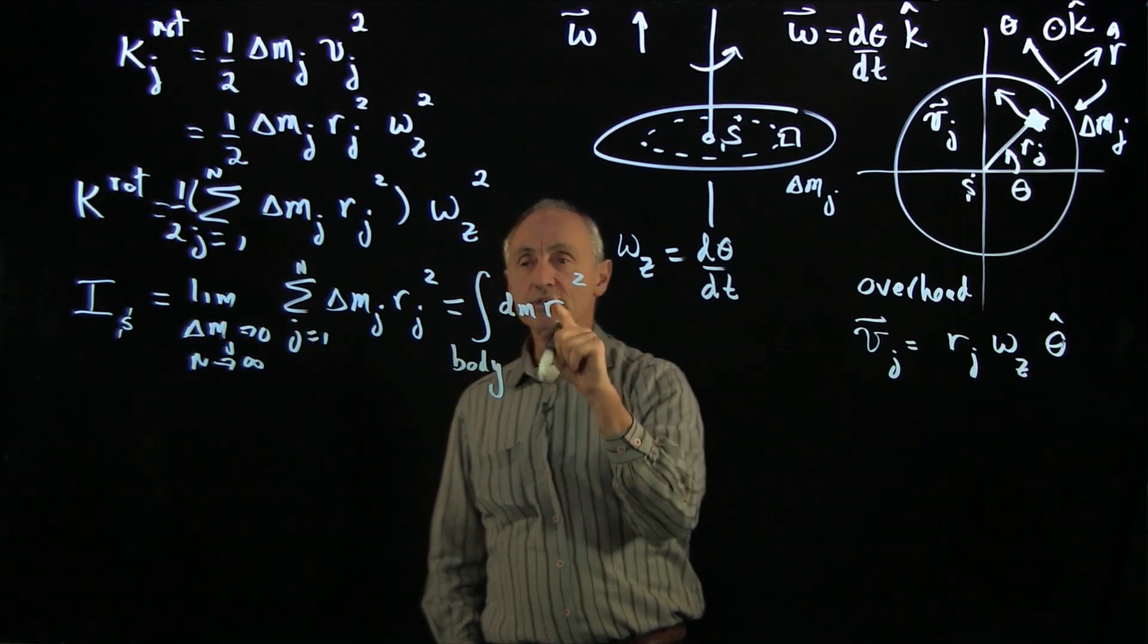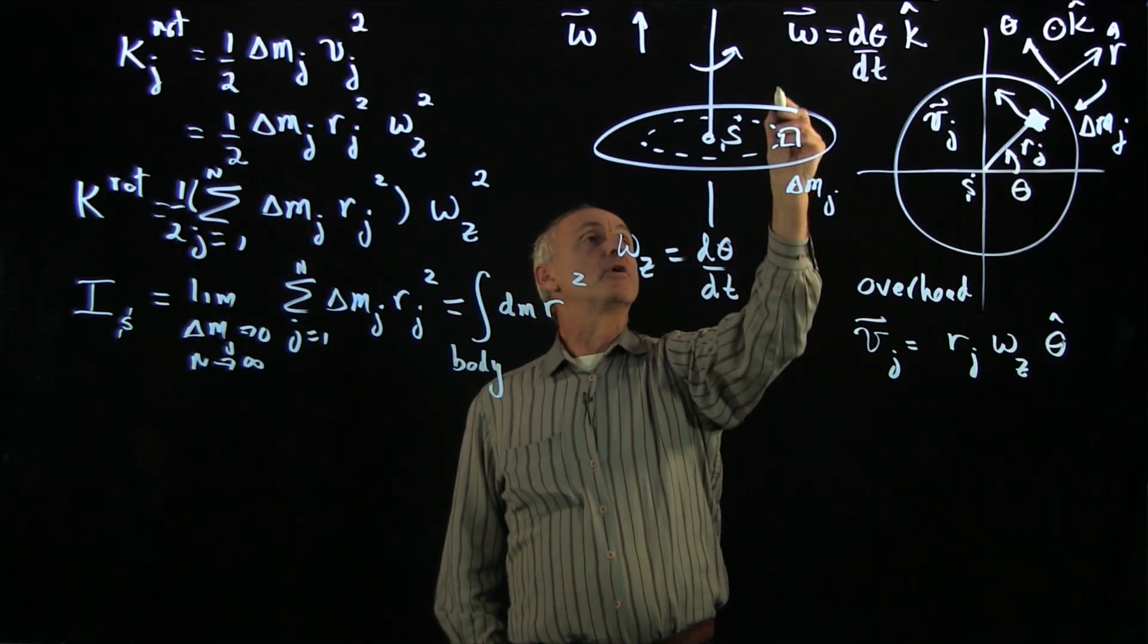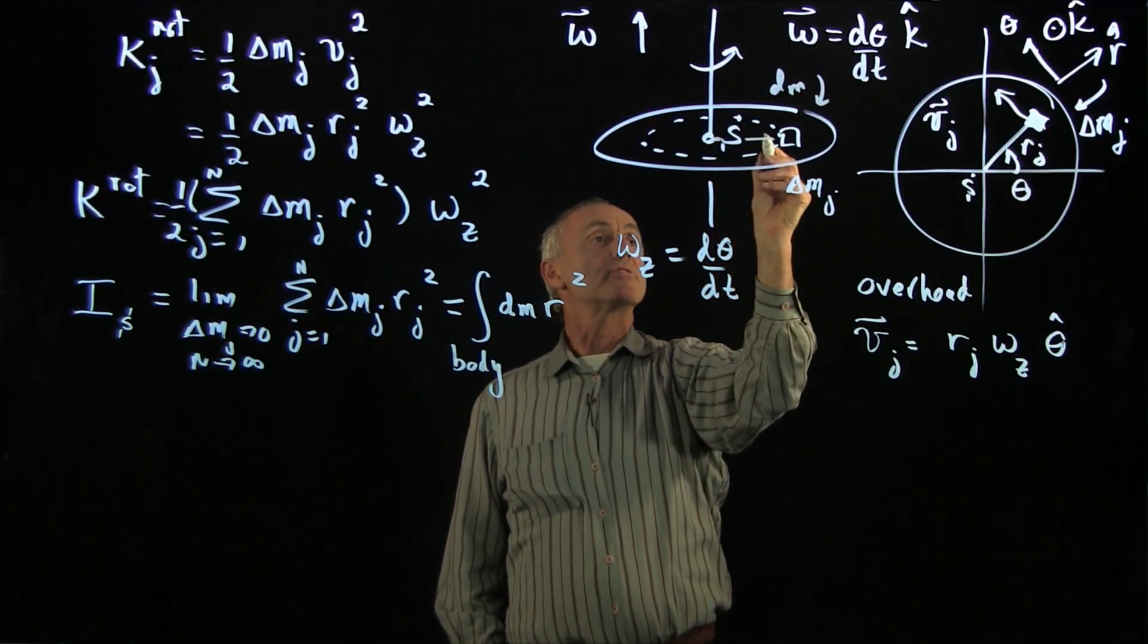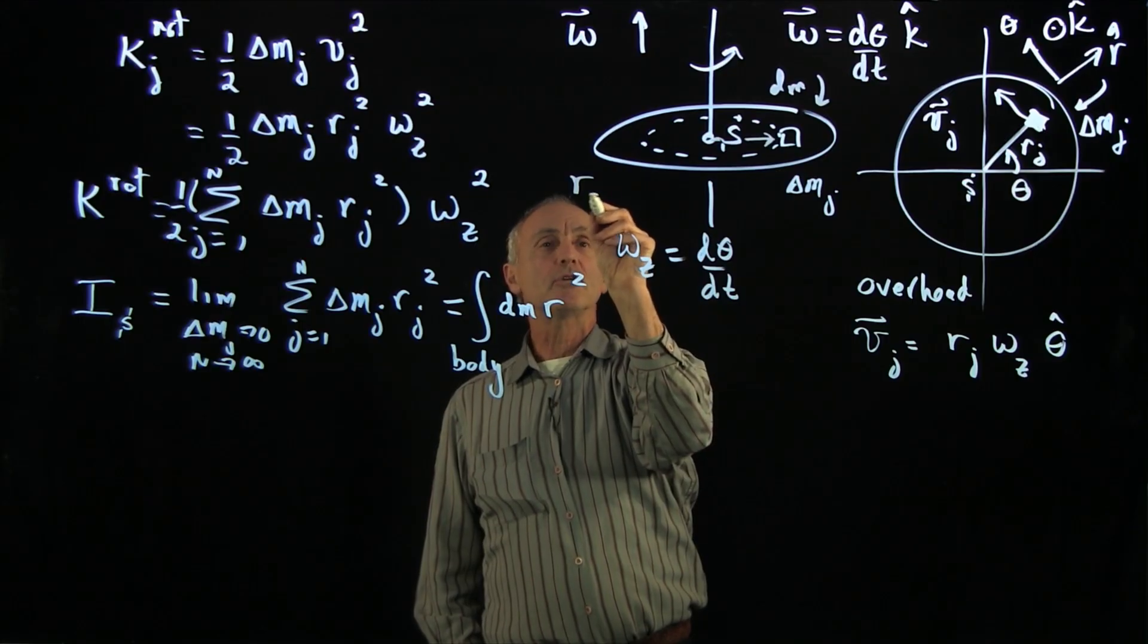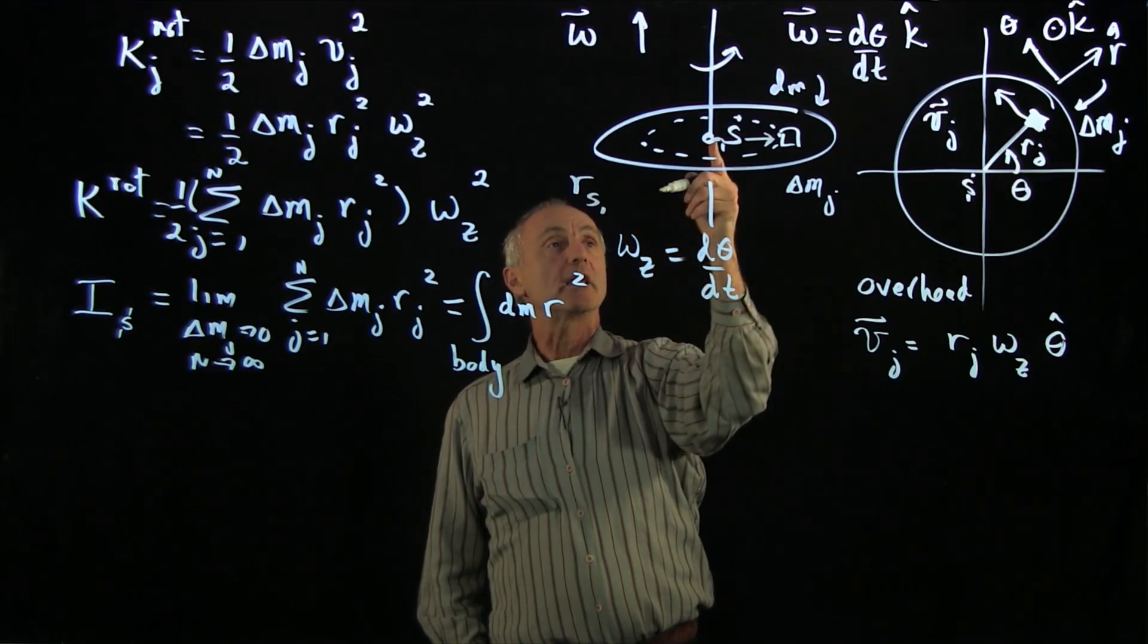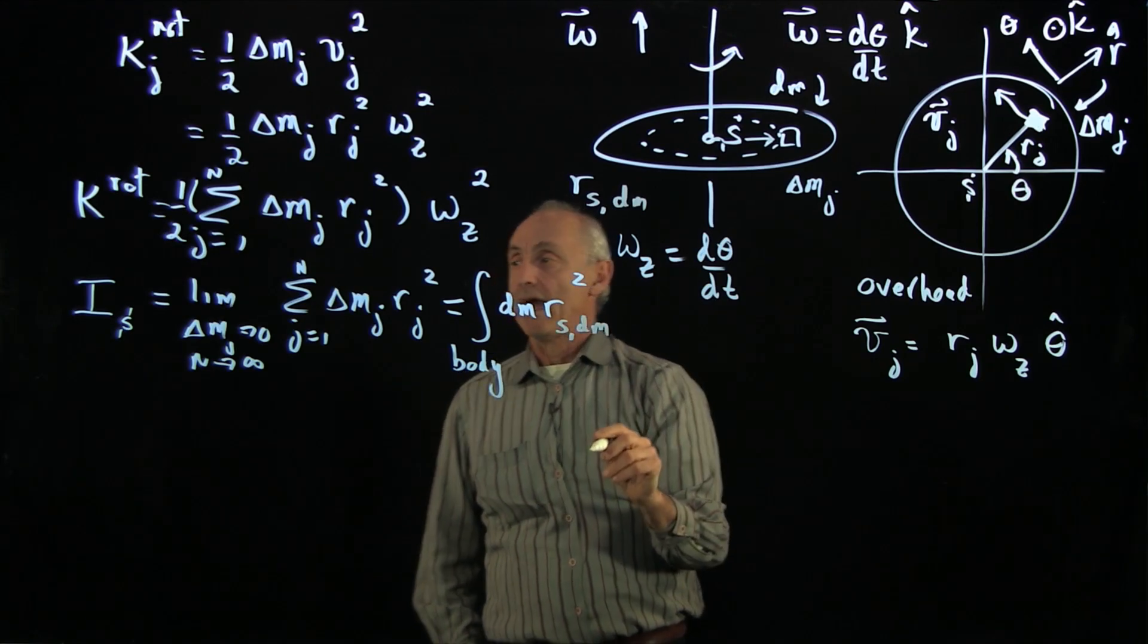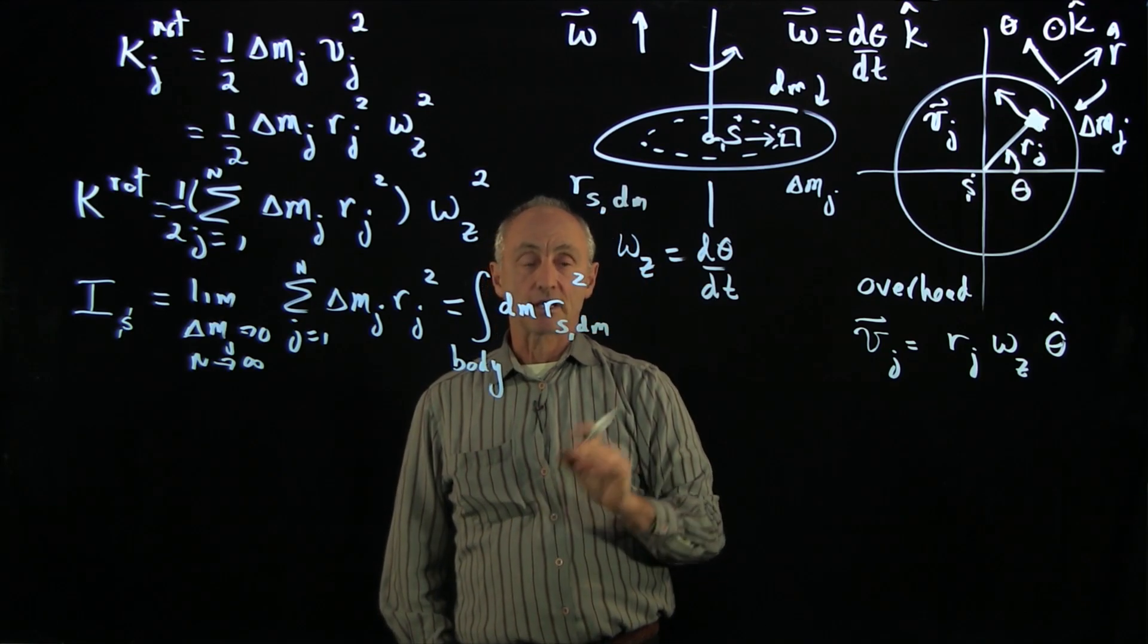Now here, what is the meaning of the r? Well, for our continuous body here, if we call this dm and we define the distance from s to the body r, I'm going to just put a little notation in here: it's the distance from s, the axis we're calculating about, to where the body is dm. So I'll write s to dm. And this is what we call the moment of inertia of a continuous body.